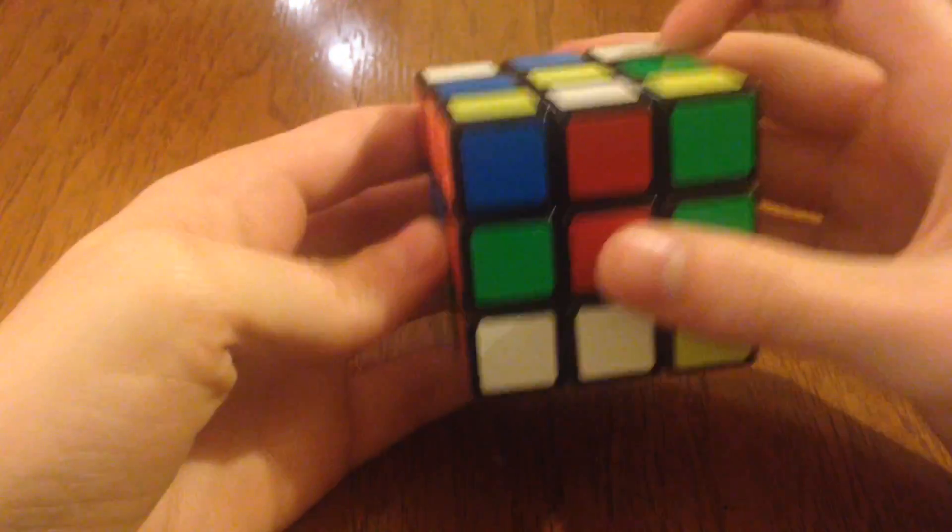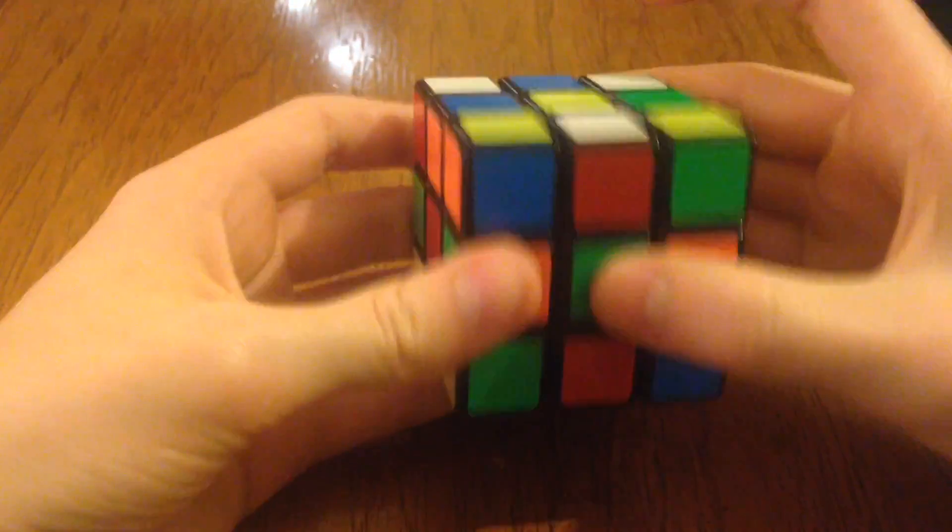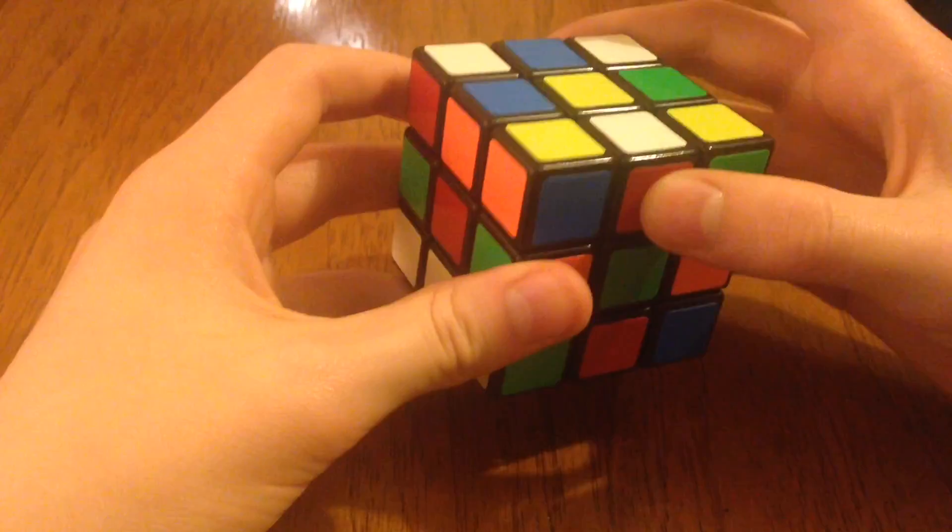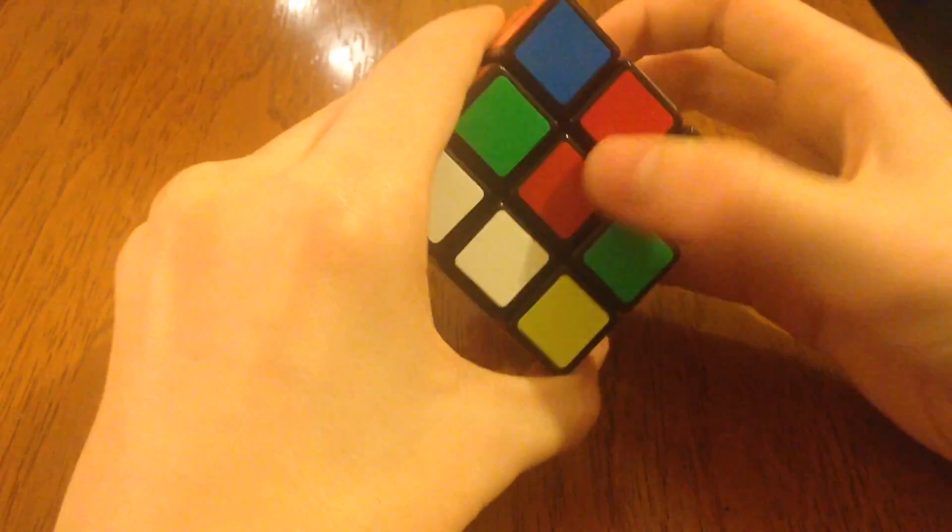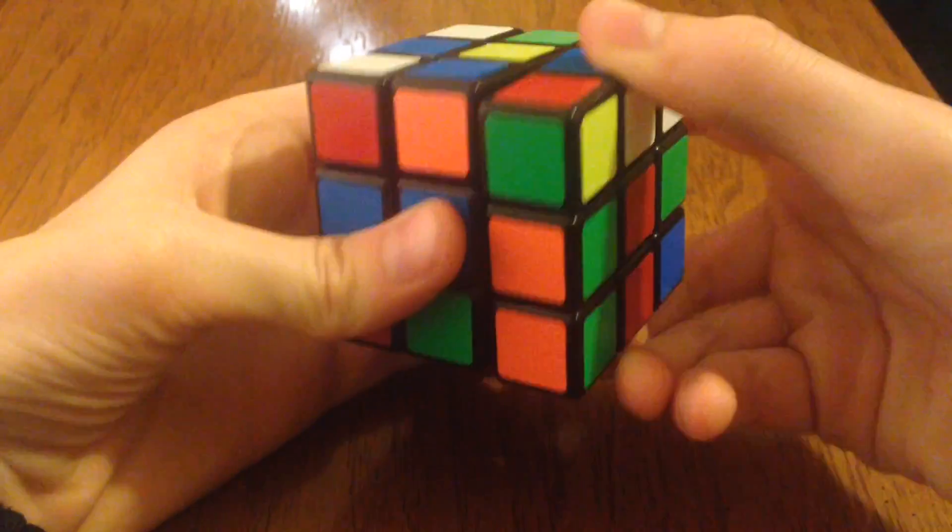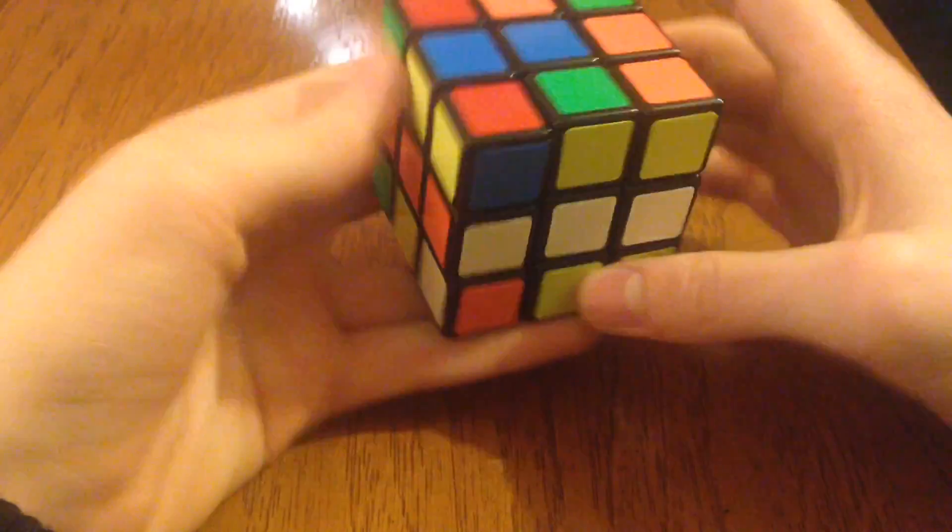So what you want to do is, say it's on the green, and you see that it's a white and a red. You want to move it over to the red, so that it matches there, and then spin it around. And you have it in the correct spot.